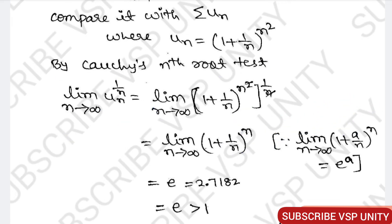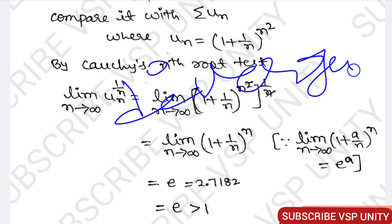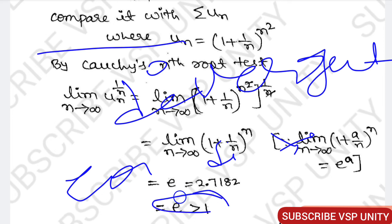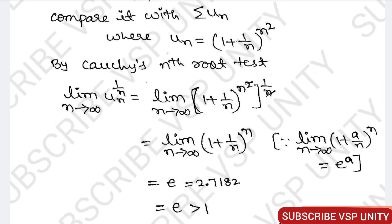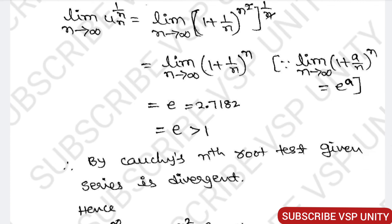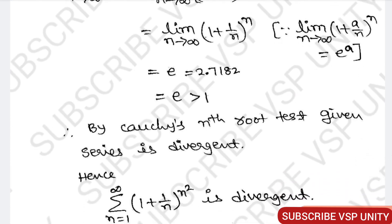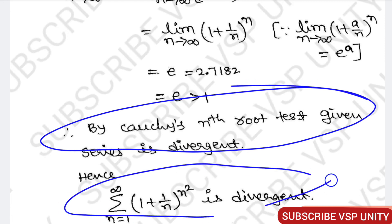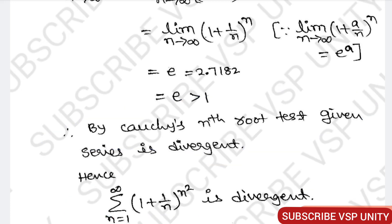Sir, the question says 'test the convergence,' but here we got divergent — is that okay? Yes, when the question says 'test the convergence,' it means you should test it and report the result. Here, since l is greater than 1, the given series Σ from n=1 to infinity of (1 + 1/n)^(n²) is divergent by Cauchy's root test.